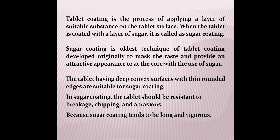Tablet coating is the process of applying a layer of suitable substance on the tablet surface. When the tablet is coated with a layer of sugar, it is called sugar coating. Sugar coating is the oldest technique of tablet coating, developed originally to mask the taste and provide an attractive appearance to the core using sugars. Tablets having deep convex surface with thin rounded edges are suitable for sugar coatings. The tablet should be resistant to breakage, chipping, or abrasion as the sugar coating process is very rigorous and lengthy.